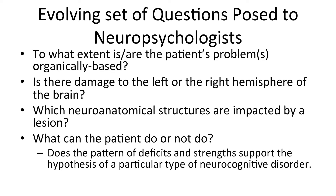Neuropsychologists have dealt with an evolving set of questions, which you can usually pin to certain periods of time. One early question was: what is the extent of the patient's problem — is it organically based, meaning attributable to the hardware of the brain, or is it something else? That question has faded a bit because the answer is usually more complex than assumed. Another question was: is there brain damage to the left or right hemisphere? Popular media sometimes asks if you're right-brained or left-brained, but everyone's both-brained — the two hemispheres interact, though there are distinguishable differences.